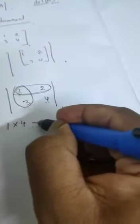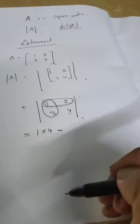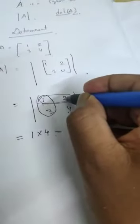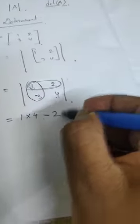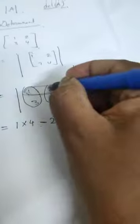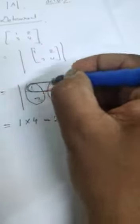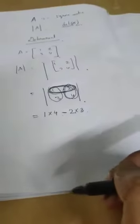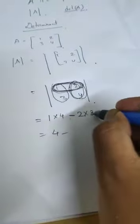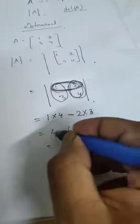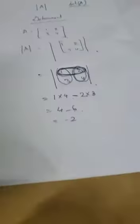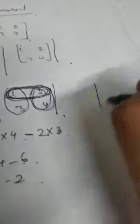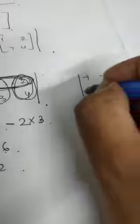Then, the next number is 2. Give a minus sign — minus 2. Close the corresponding column and corresponding row of 2. What is left? 3. So 2 into 3. This gives us 1×4 minus 2×3, which equals 4 minus 6 = minus 2. The sign pattern used here is: plus, minus, plus, minus.